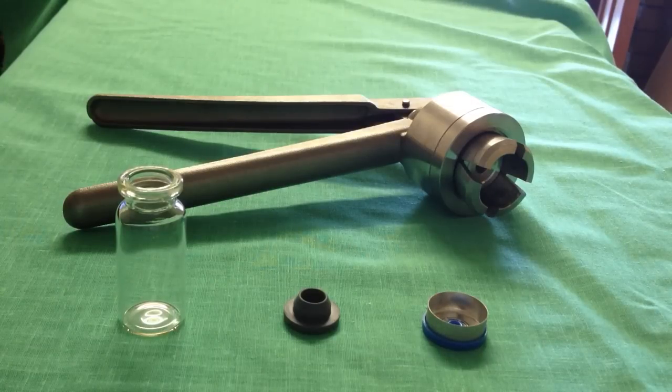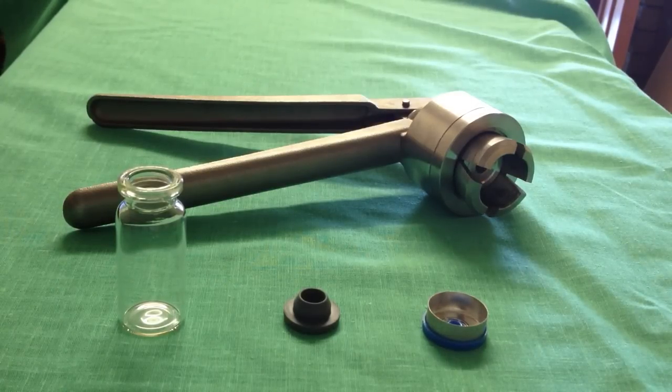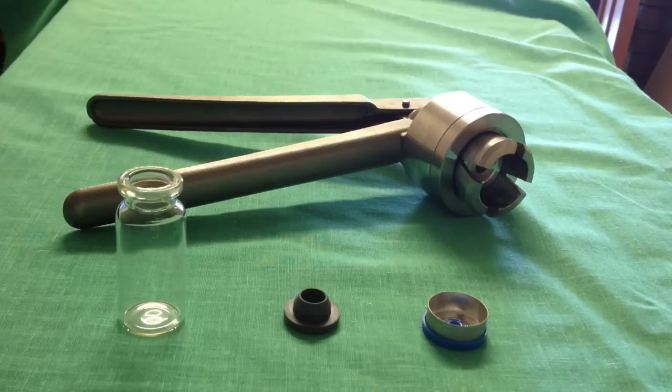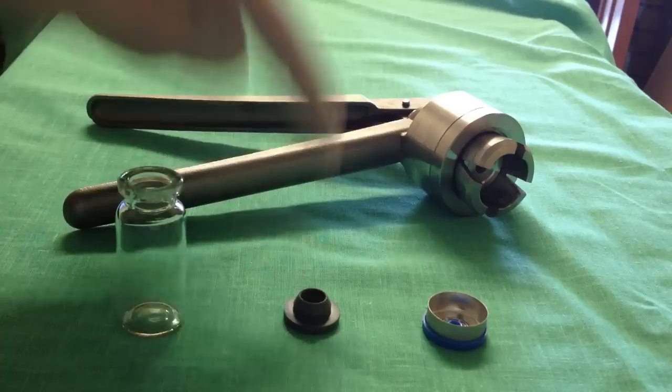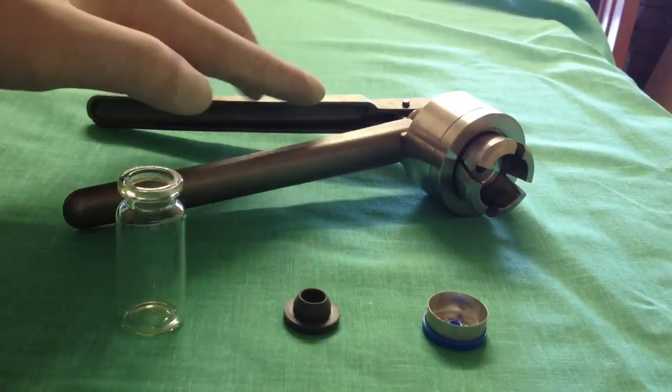Here in this example, we're using the crimper to crimp a cap on a 10mm vial. Now, it's all the same for different size vials. What we have here is the actual cap, the rubber stop, the vial and the crimper.